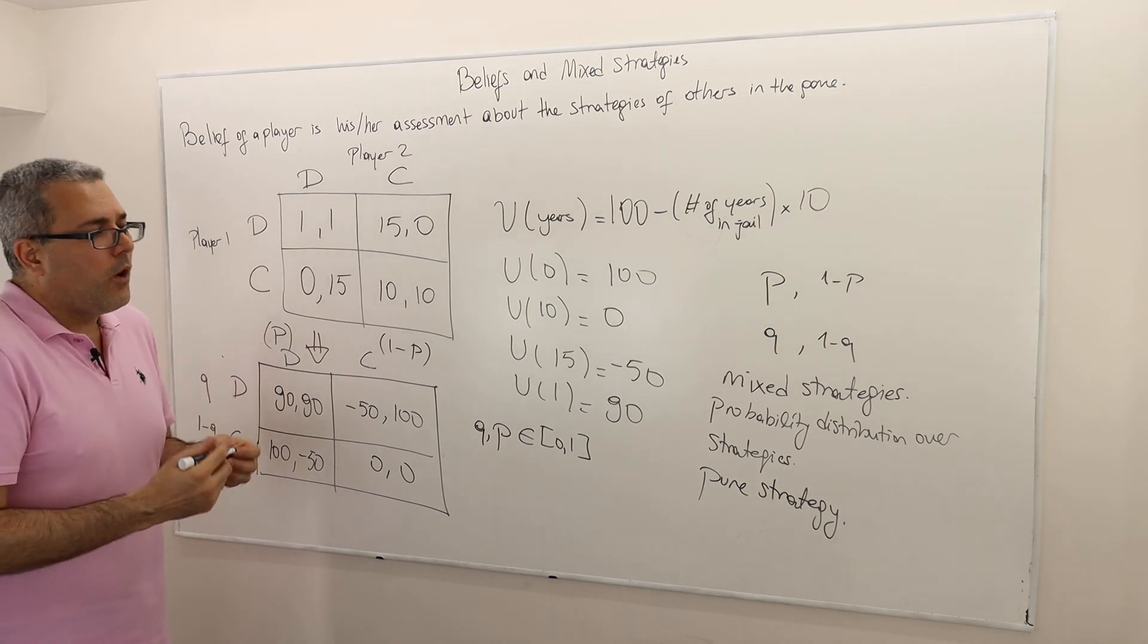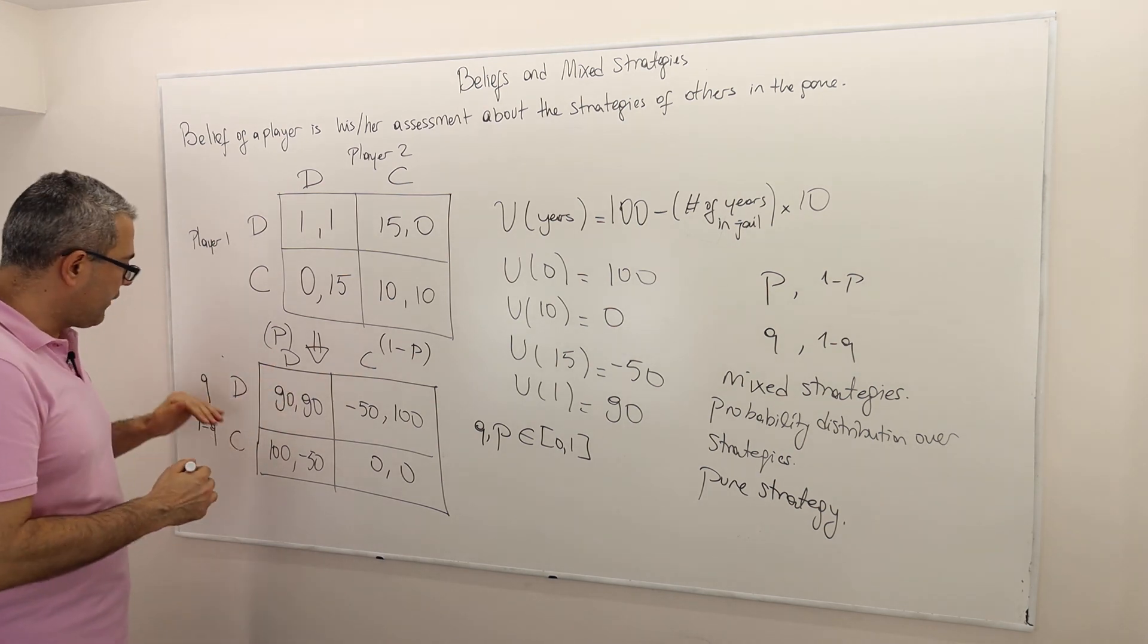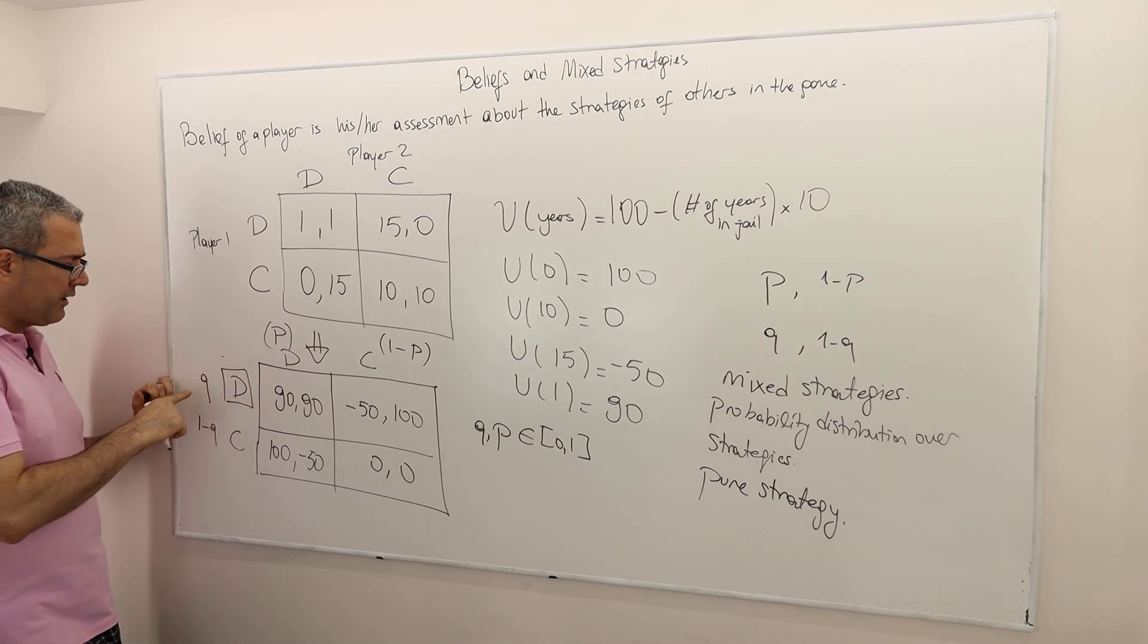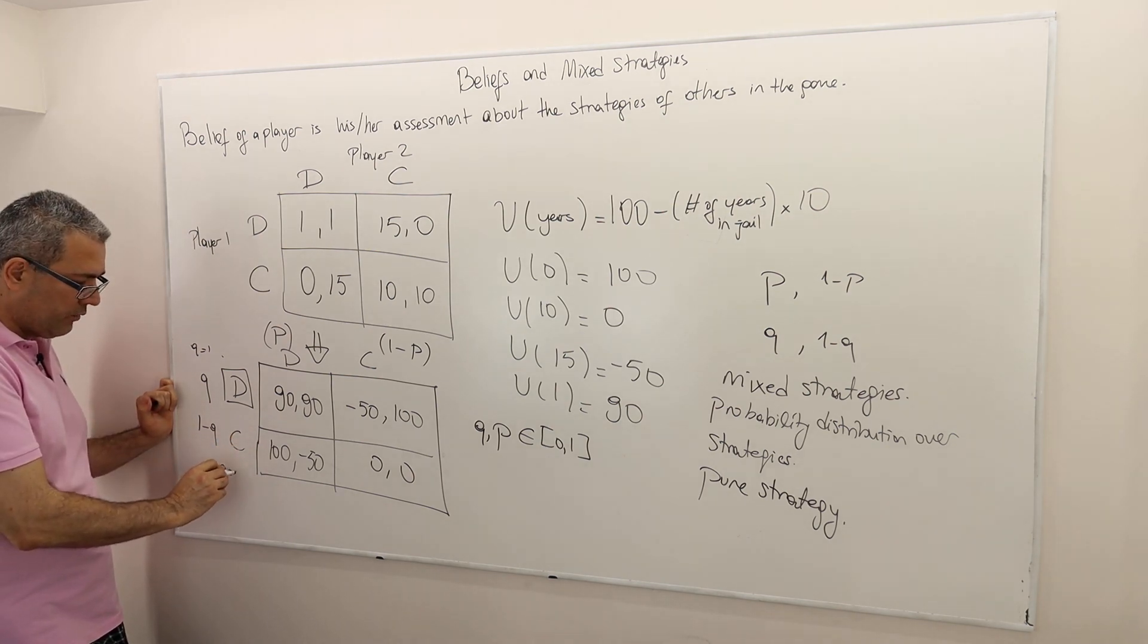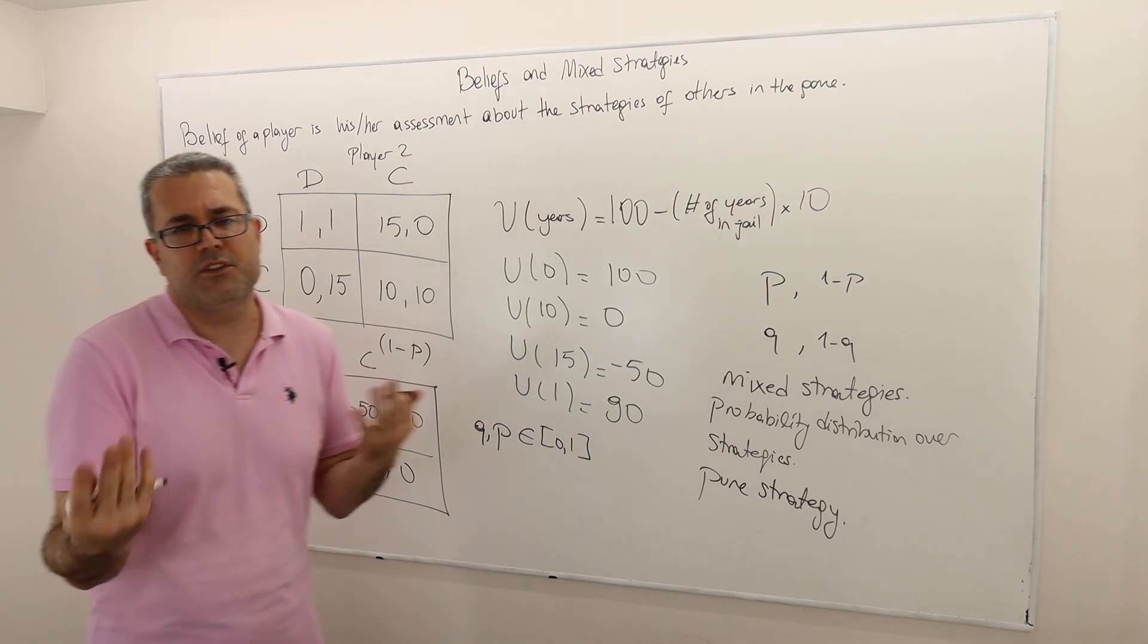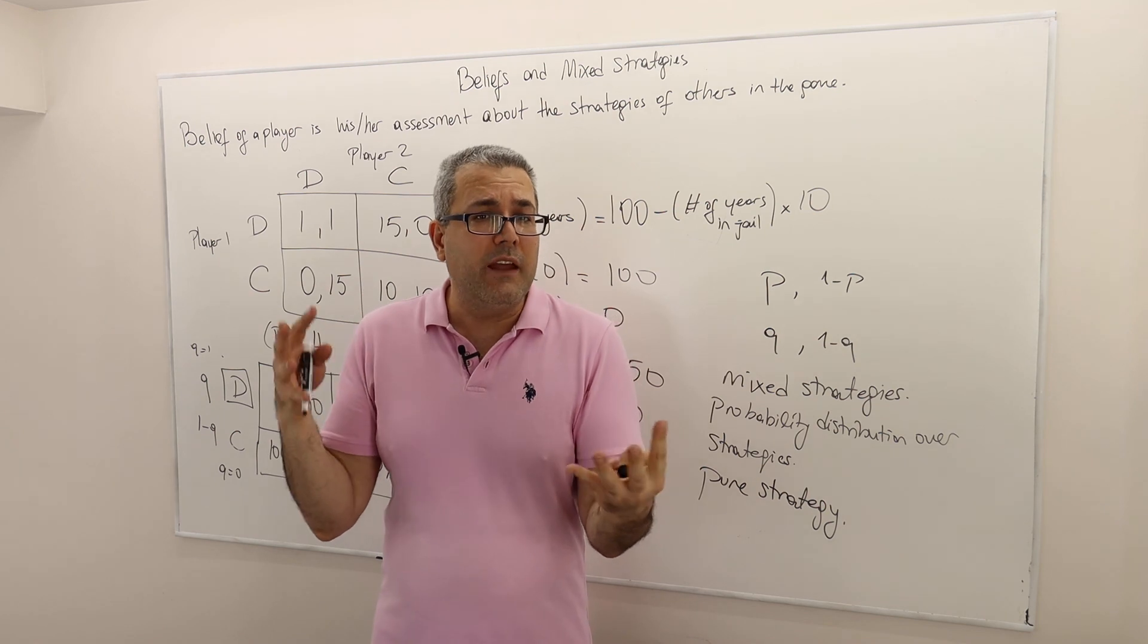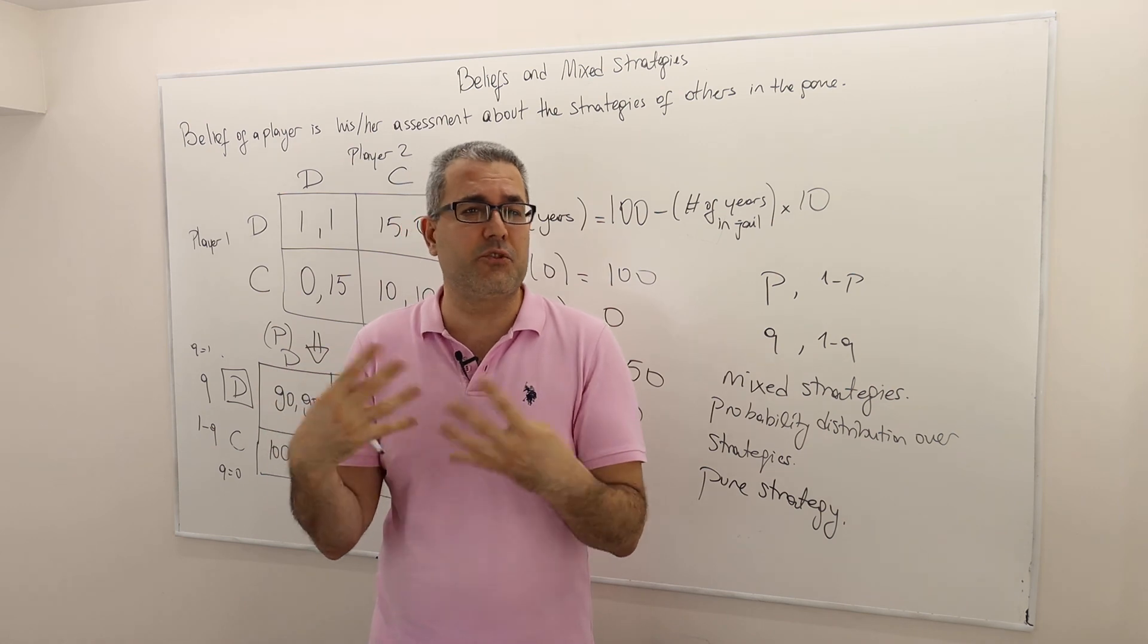So obviously every pure strategy is a mixed strategy. For example, a pure strategy D is in fact a mixed strategy where Q is equal to one. A pure strategy C is again a mixed strategy where Q is equal to zero. So one minus Q is equal to one. So you got the idea. Every pure strategy is in fact a mixed strategy. So mixed strategy is just another way of looking at beliefs and also another way of extending and understanding the set of strategies.